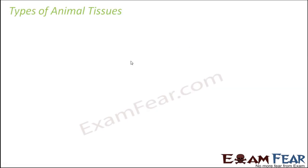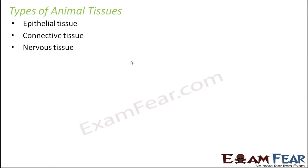Look at the different types of animal tissues. Now broadly there are 4 types of animal tissues: epithelial tissue, connective tissue, nervous tissue, and muscular tissue. These are the 4 major types of tissue present inside the body of any animal. We will talk about each of these tissue types in detail and see if they have further subtypes as well.